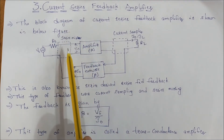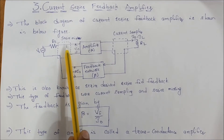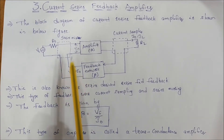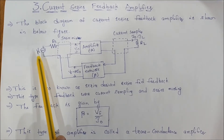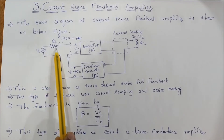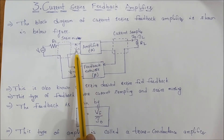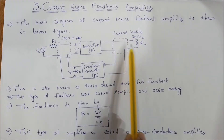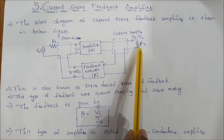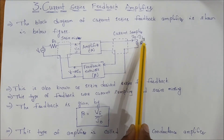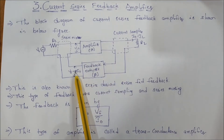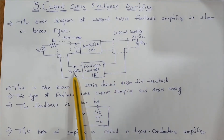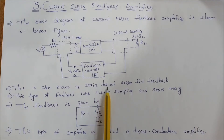Current series mixing means the source signal is voltage and resistance RS is connected in series. The amplifier input is VIN. If we use current sampling, the output is current — load resistor RL flow is current. The feedback factor VF equals beta into I0, so VF is the feedback voltage. This type of feedback is series-derived, series-fed feedback.